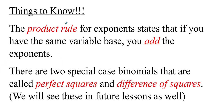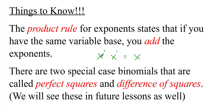Here are our things to know. We have what we call the product rule for exponents. This states that if you have the same variable base, you will add the exponents. So like an x times an x - they both have an exponent of one. After multiplying the same base, we add the exponents up.